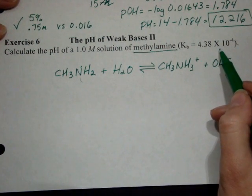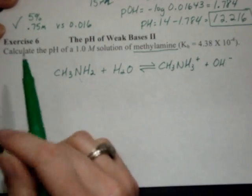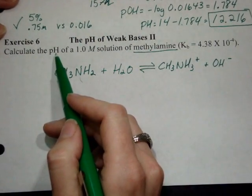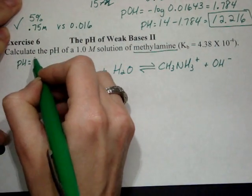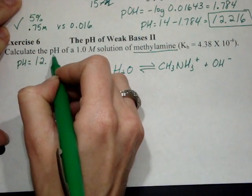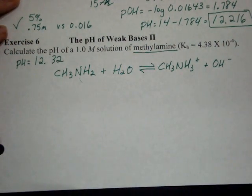You have your KB value. Use rice and your KB value to calculate first the pOH and then the pH. To check and see if your answer is correct, pH will be 12.32 when you get done. If not, come ask me about it tomorrow. Good luck.